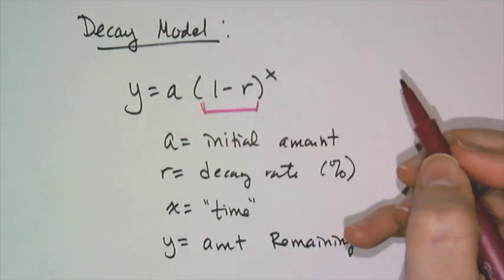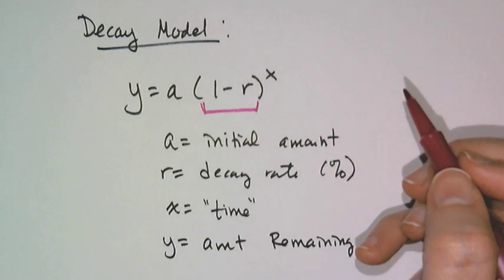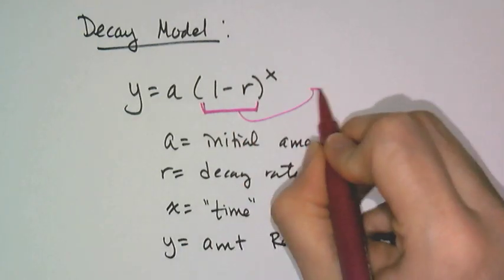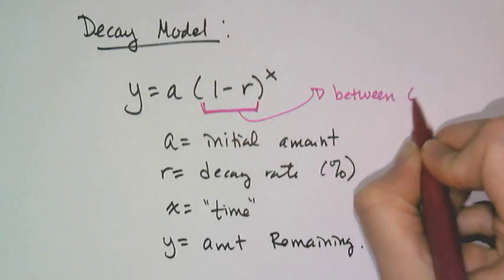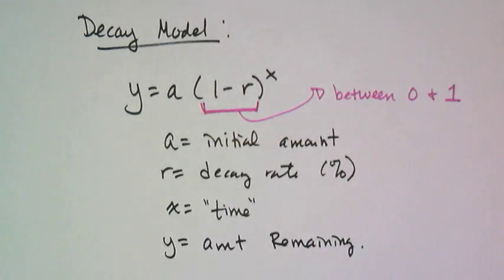Now what makes this decay compared to growth is that this number here, the 1 minus R, is going to be between 0 and 1. This number has to be between 0 and 1. It's not negative, because negative does not work in exponential. If you think about it, if I multiply something by 0, it's all gone. And if I multiply something by 1, it's the whole thing, the original amount. So something in between all gone and the original amount is getting smaller, it's decreasing. The closer to 0, the faster the decay rate, the faster your population will go away. And that totally makes sense.